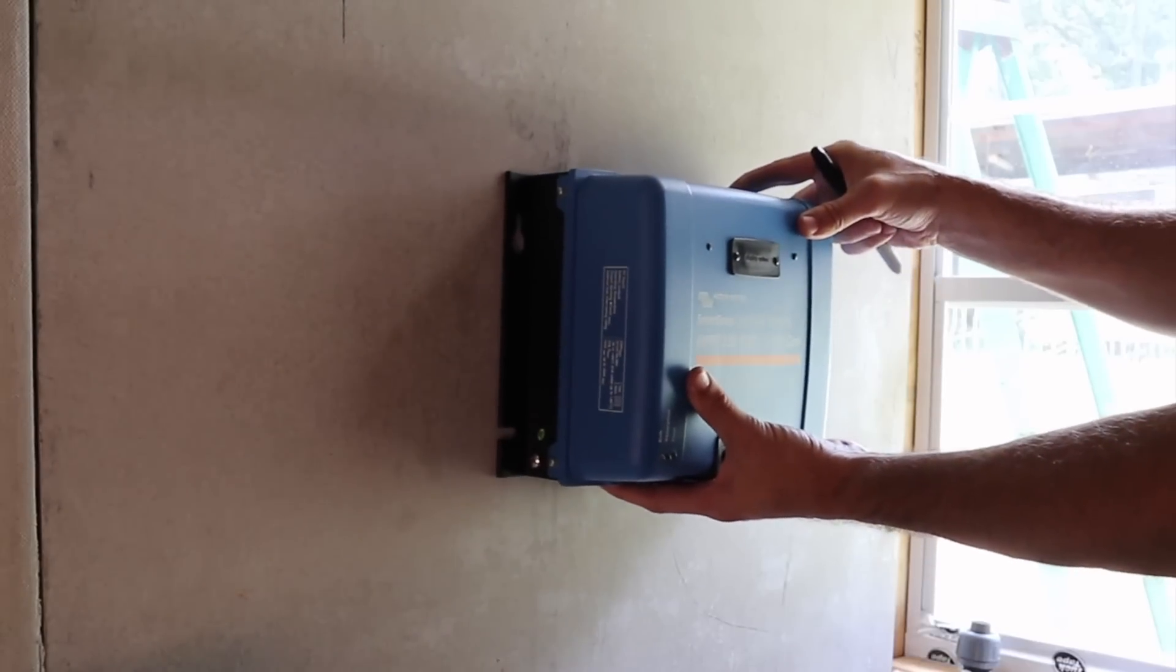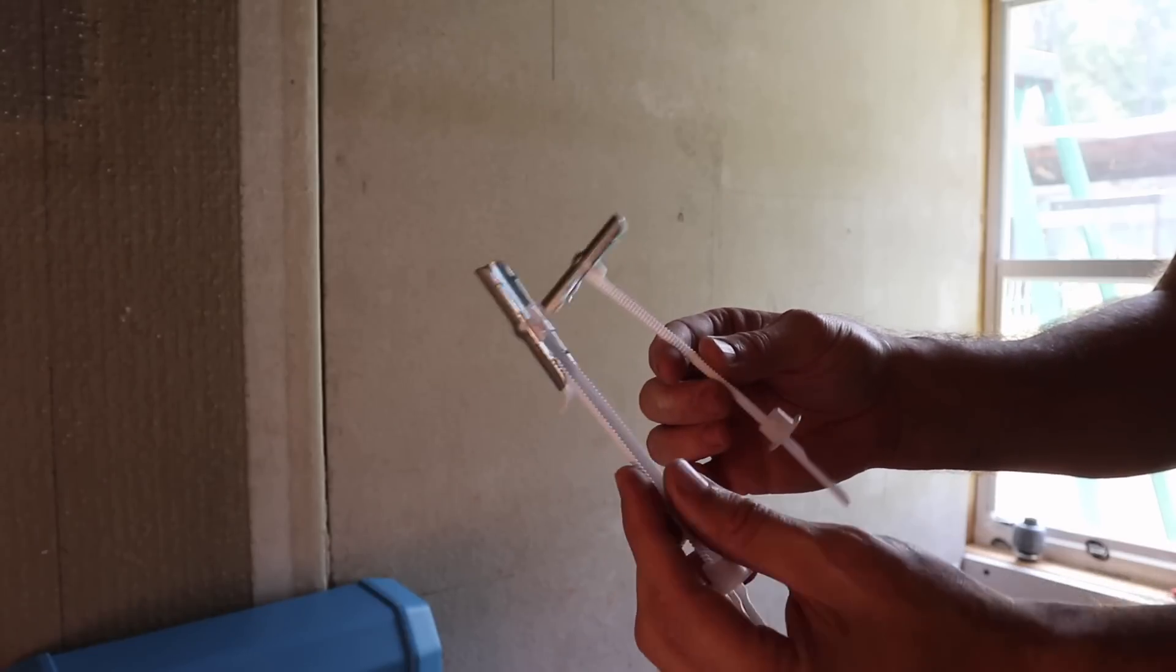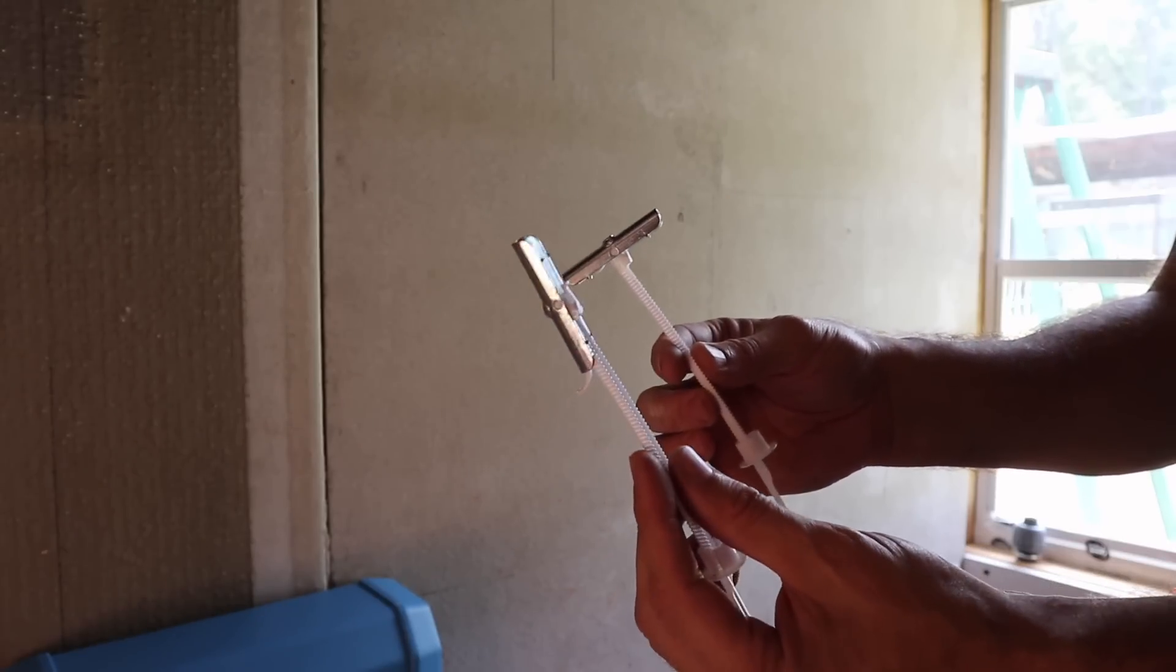Then our MPPT is going to go right in this area right here. We're going to use our flip toggle bolts on that as well because it weighs about 25 pounds.